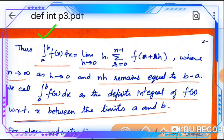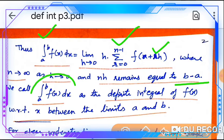Thus, the integral from a to b of f(x) dx is equal to the limit as h tends to zero of h times the summation from r = 0 to n−1 of f(a + rh), where n tends to infinity, h tends to zero, and nh remains equal to b − a. We call this integration the definite integral of f(x) with respect to x between the limits a and b.